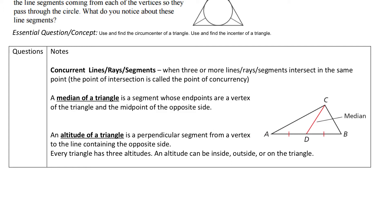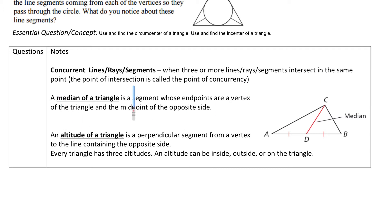First of all, the first one we're going to talk about is something called concurrent lines. You can say concurrent lines, concurrent rays, or concurrent segments. When three or more lines, rays, and segments intersect at the same point, we're going to say those are concurrent.